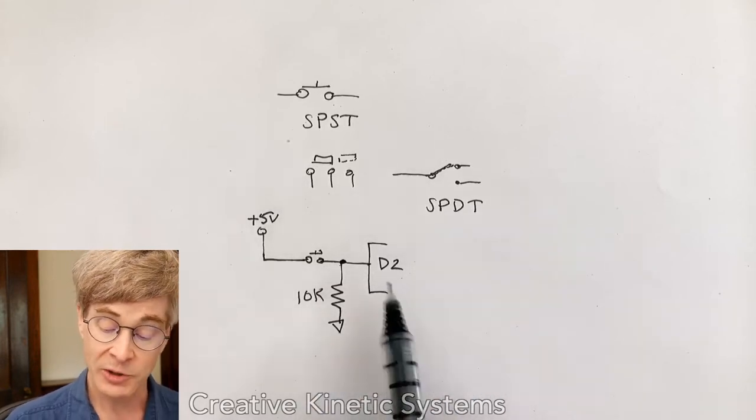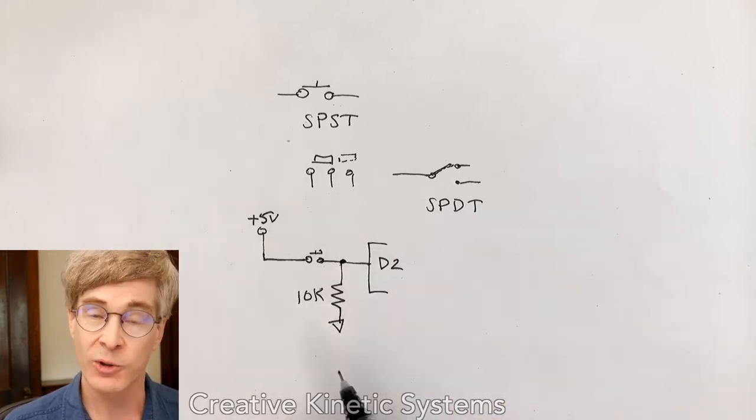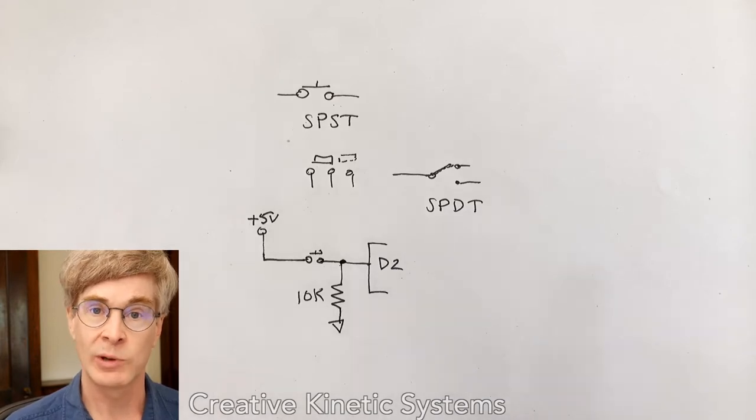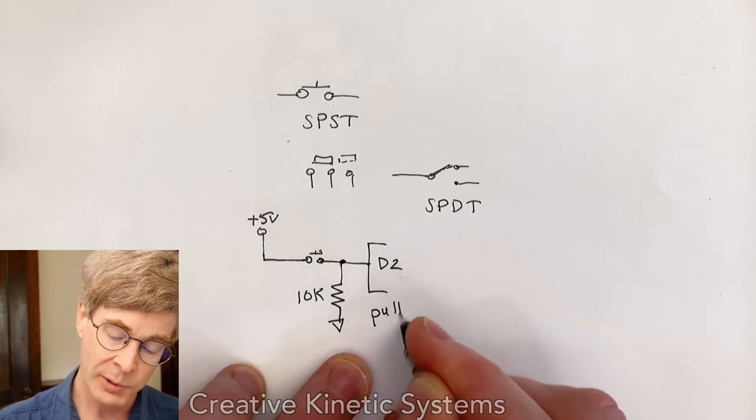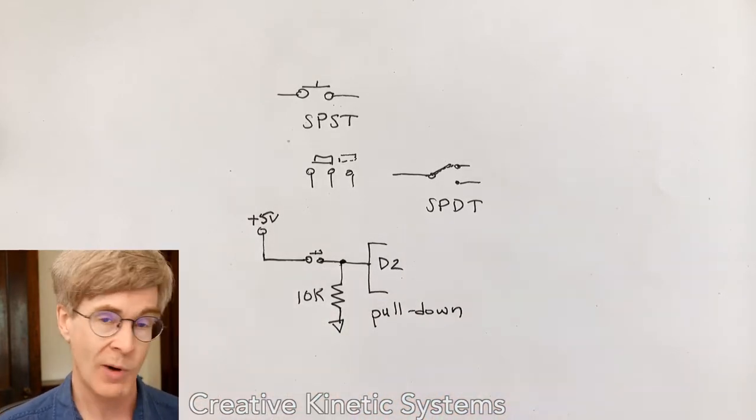When I open the switch, effectively any residual charge left from that D2 will now flow through the resistor to ground. And D2 will now achieve a reliable zero volts and have a reliable state. In this case,